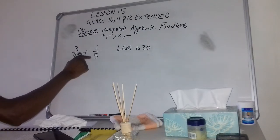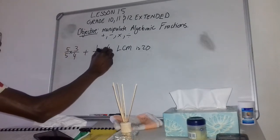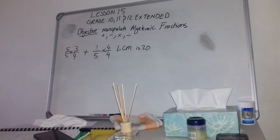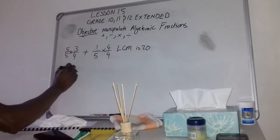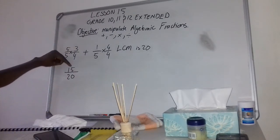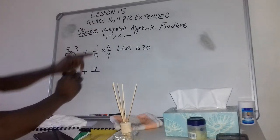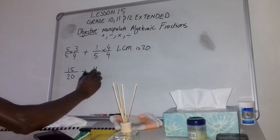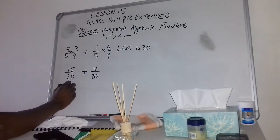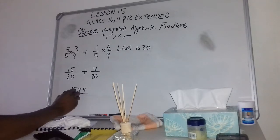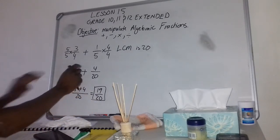We need to make the denominator 20. So we multiply the first fraction by 5/5 and the second fraction by 4/4. That gives us 15/20 plus 4/20. Now that the denominators are the same, all we need to do is add the numerators: 15 plus 4 gives us 19, so the final answer is 19/20. From two fractions down to just one fraction.